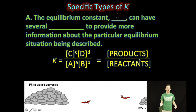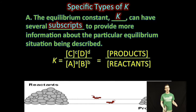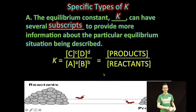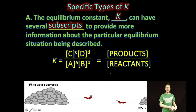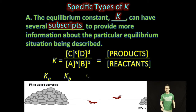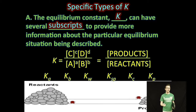First it's important to recognize that the equilibrium constant K can have several subscripts to provide more information about the particular equilibrium situation being expressed. It's important to recall that in general we describe an equilibrium constant as a ratio of the product concentrations to the reacting concentrations. Adding a subscript to K gives us more information about the specific type of equilibrium reaction.